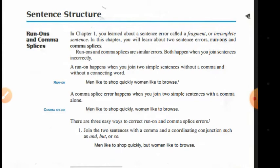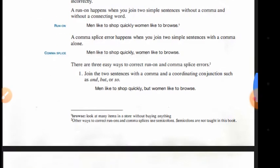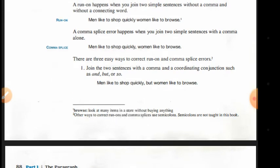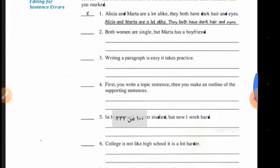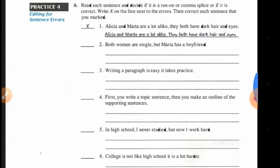Now, regarding sentence structure: run-ons and comma splices are excessively long sentences. As I told you, this kind of sentence is not advised and is not easy to use in academic writing. But if you must practice this kind of structure, make sure not to lose the smooth movement of ideas. What we have to do is use commas to make the sentence easy and connected.